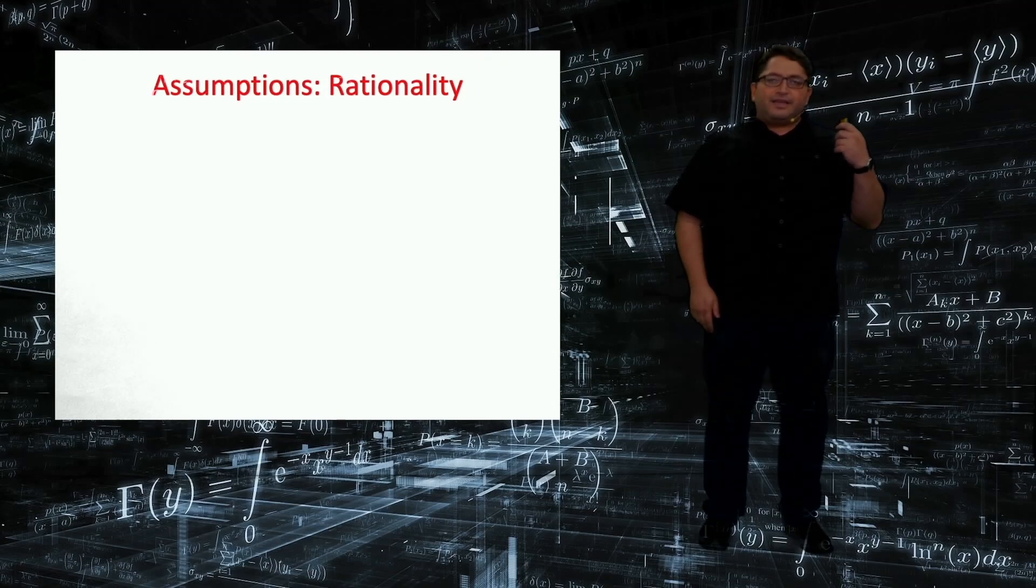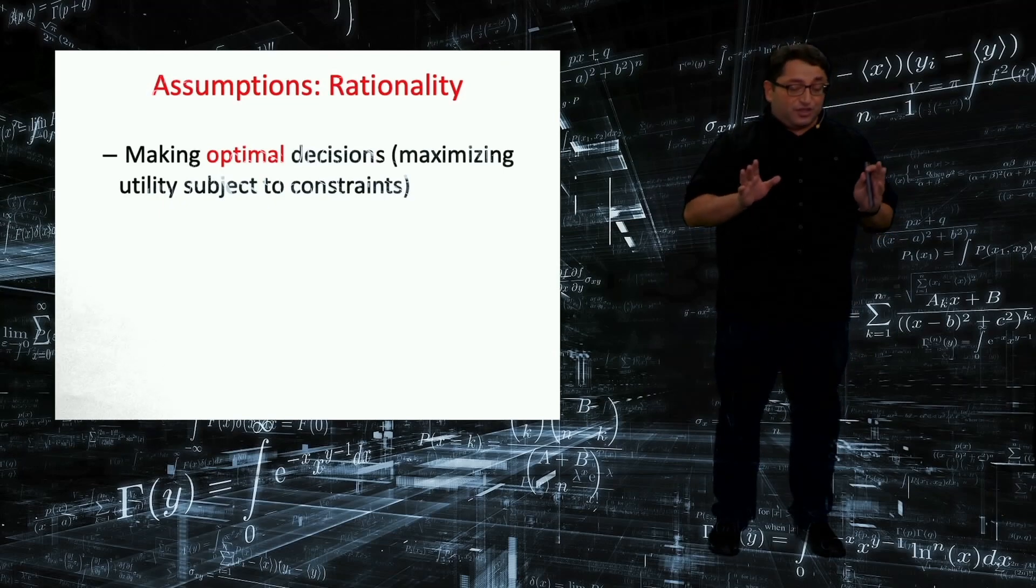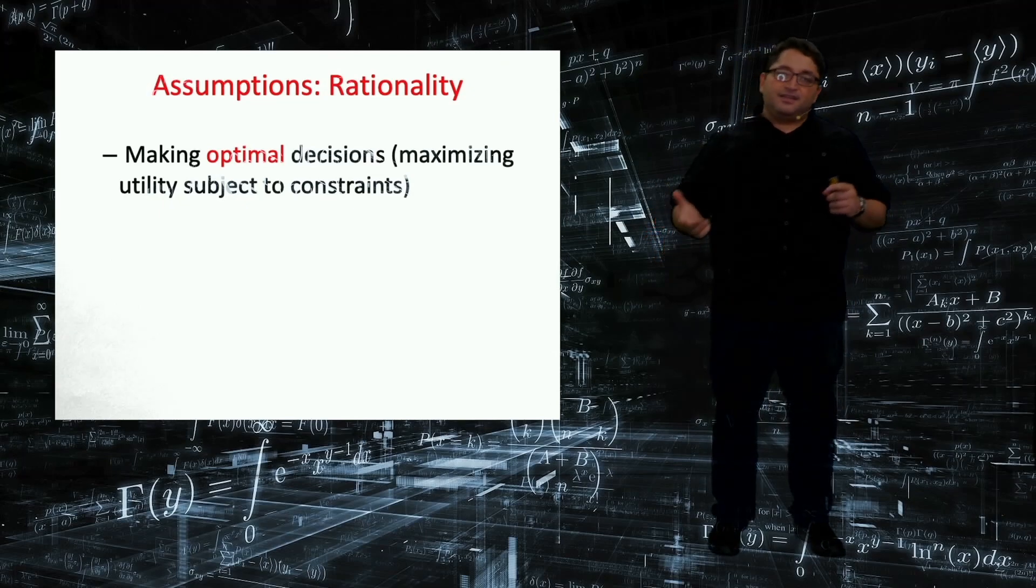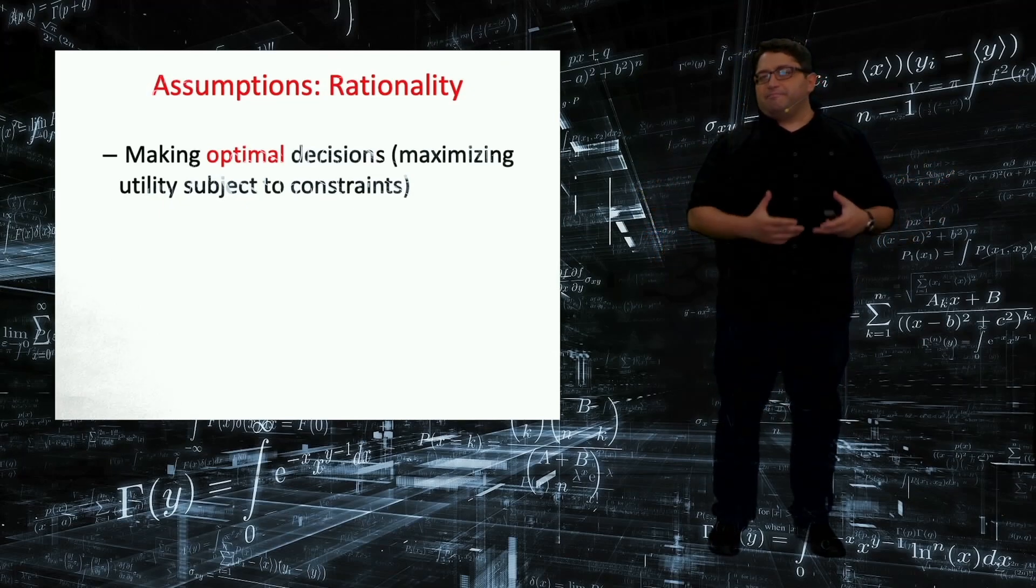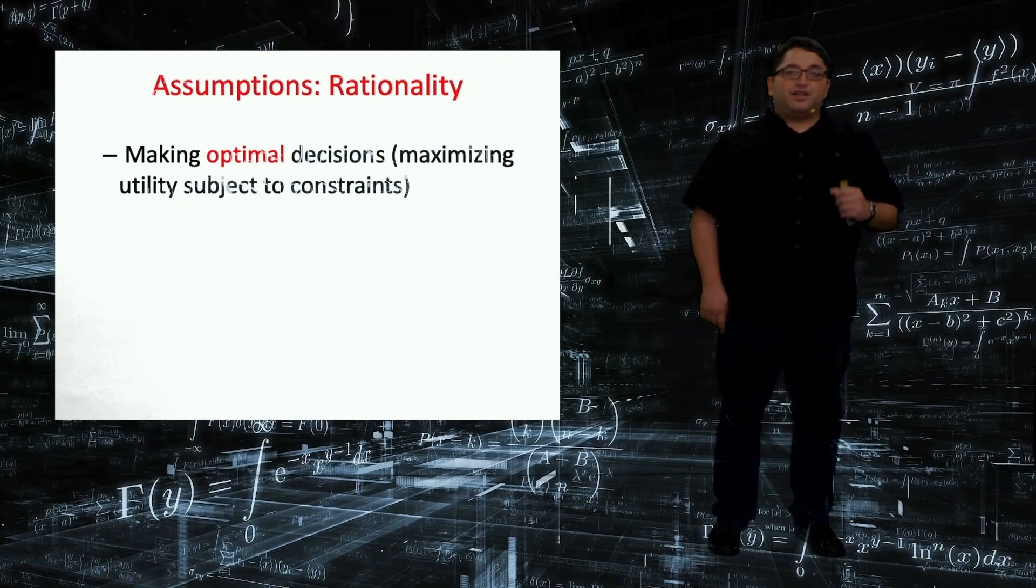We talked about rationality a little bit in the first video, and the definition is the standard definition: making optimal decisions in the sense that maximizing preference, maximizing utility, subject to constraints such as budget, and it can be any other constraints. So this is nothing but an optimization problem, maximizing a function subject to constraints.